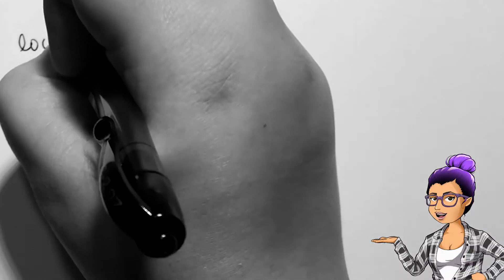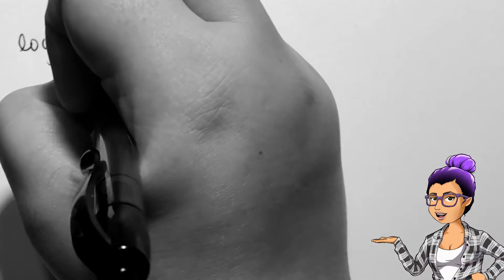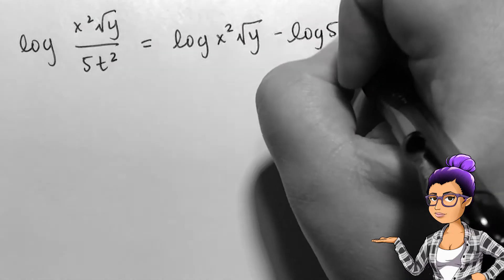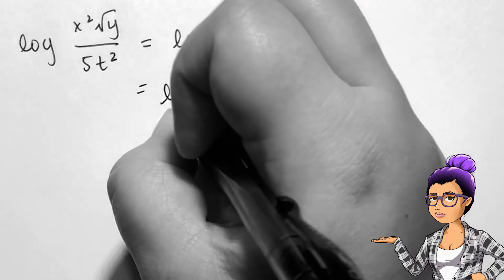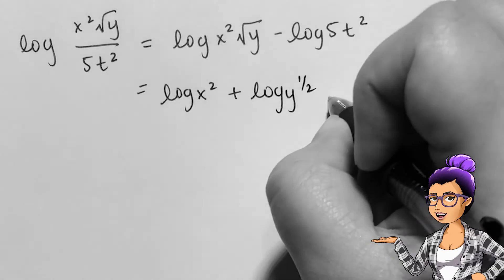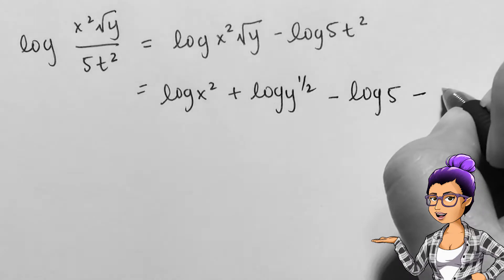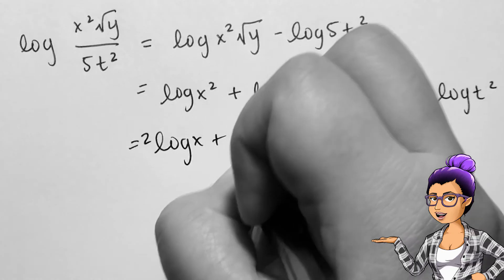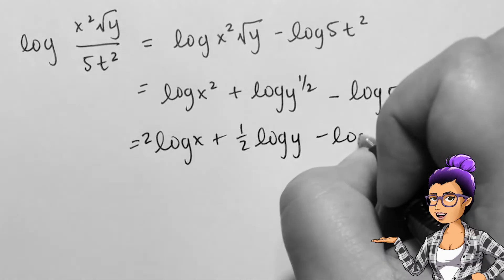Given common log of x squared times square root of y divided by 5 times t squared, I see 4 elements here, so I'll expand this into 4 separate logarithms with no powers in them. After using the quotient, product, and power rules, I get 2 times log x plus 1 half log y minus log 5 minus 2 log t.